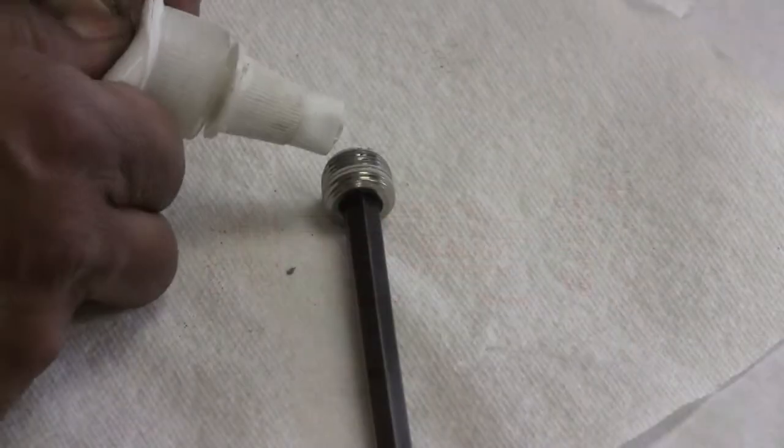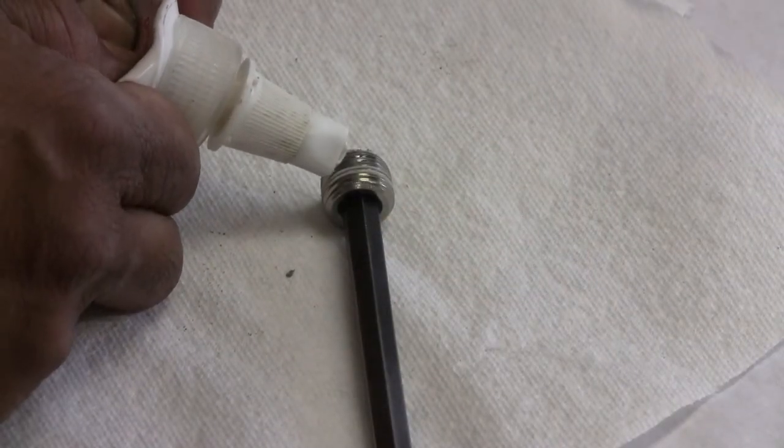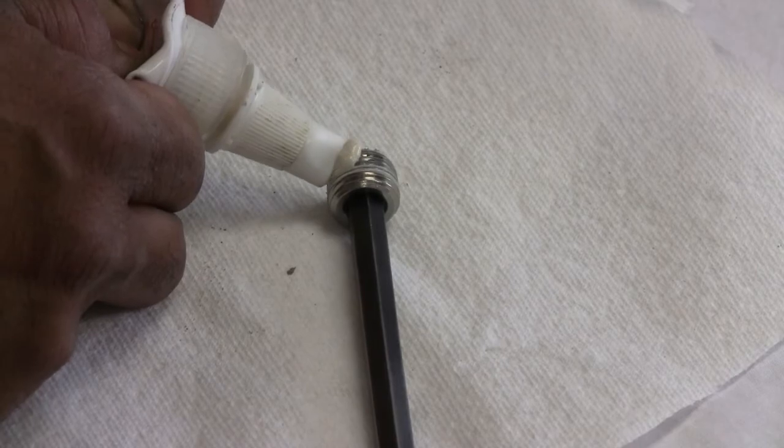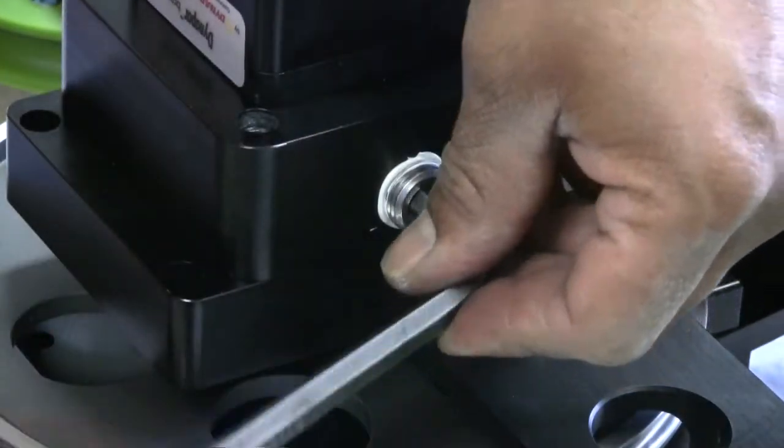Using thread sealant, run a bead on the leading threads of the access plug. Reinstall the plug and firmly tighten it.